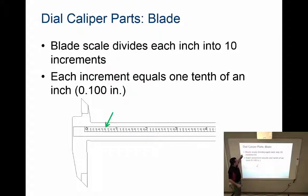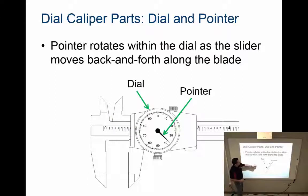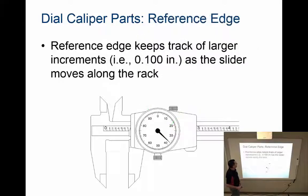The blade is divided into ten increments, meaning from zero to the one inch mark, I've divided it into ten, so each represents one tenth of an inch. On the part that slides, I have the dial, which looks like the face of a watch, and a pointer that points to much smaller increments. As I move the slide back and forth, the pointer moves.